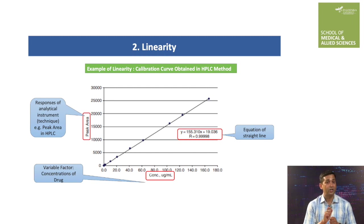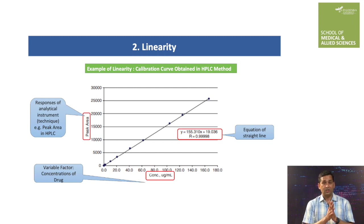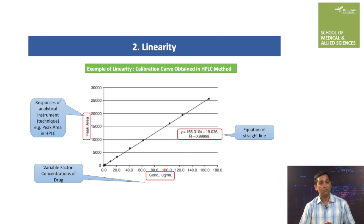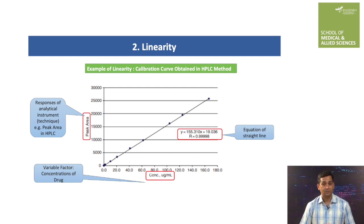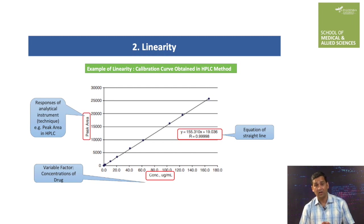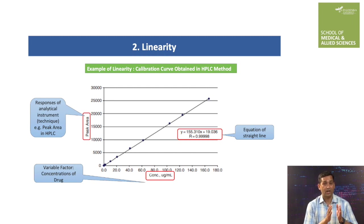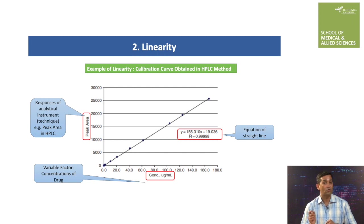This slide shows an example of linearity through a calibration curve obtained in HPLC. This curve shows different concentrations of the drug on the x-axis as the variable factor, while peak area is taken on the y-axis as the response of the HPLC instrument. Peak areas corresponding to different concentrations of API were processed in Microsoft Excel to get the straight line equation. From this straight line equation, we can get all the linearity data for submission.